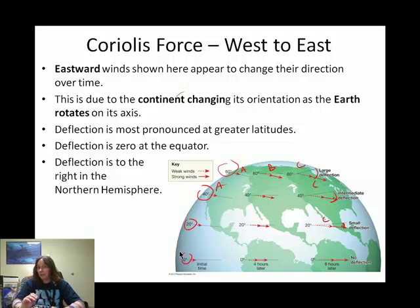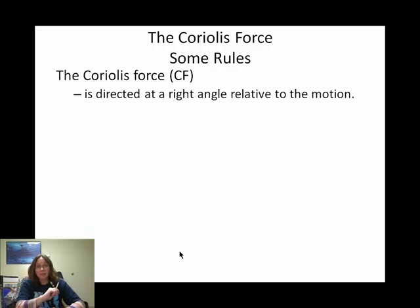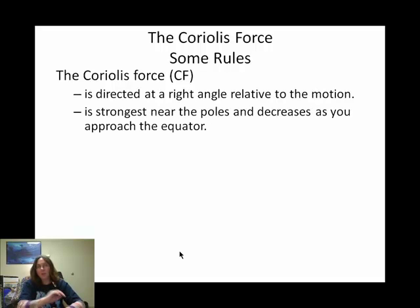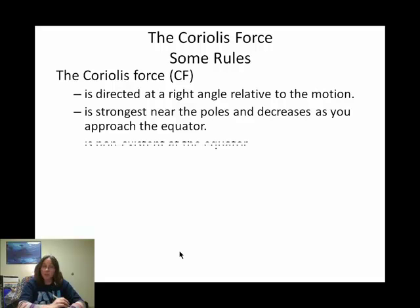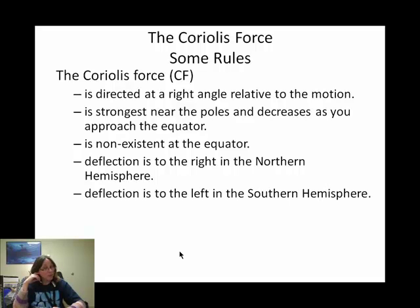Deflection is to the right in the northern hemisphere and to the left in the southern hemisphere. Some basic rules of the Coriolis force, caused by the earth rotating on its axis: it acts at a right angle relative to the motion. It is strongest near the poles, and near the equator the Coriolis force basically peters out.